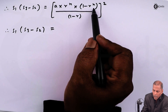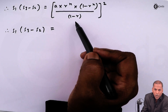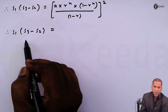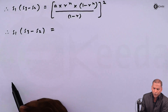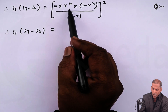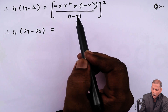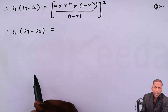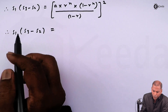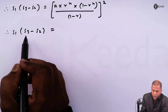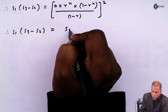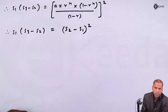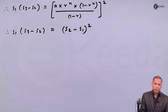Therefore S₁ times (S₃ - S₂) equals a·rⁿ·(1 - rⁿ)/(1 - r), squared. Now if you observe the right-hand side, a times rⁿ times (1 - rⁿ) upon (1 - r), this is nothing but equation 4, which is S₂ - S₁. Therefore finally we get S₁(S₃ - S₂) = (S₂ - S₁)². In this way we prove the question. Thank you.